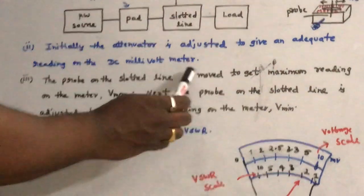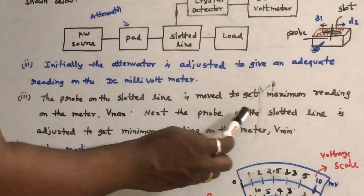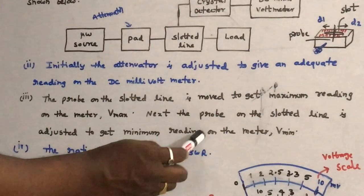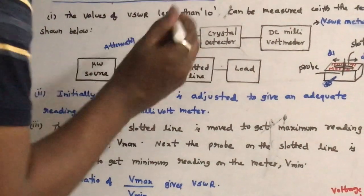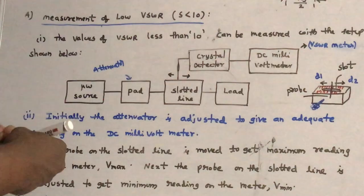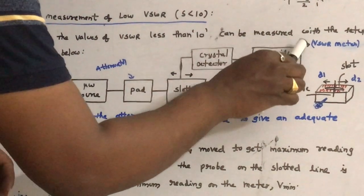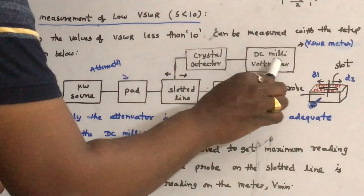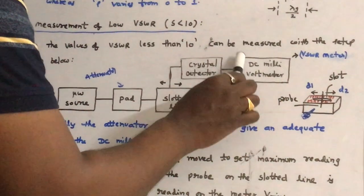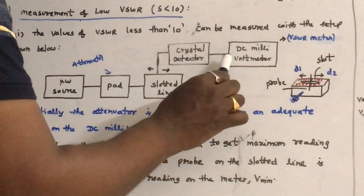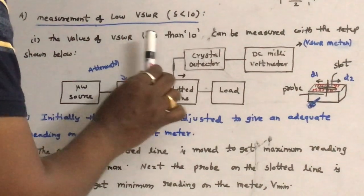The probe on the slotted line is moved to get the maximum reading on the meter, which is represented as V max. Next, the probe on the slotted line is adjusted to get the minimum reading on the meter, which is represented as V minimum. We move the probe towards the right and towards the left to find these maximum and minimum voltage readings.